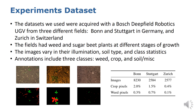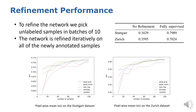Annotations include three classes: weed, crop, and soil or miscellaneous. The table here shows the number of images in each dataset and the ratio of foreground pixels. We can see that there is a high imbalance of classes in the data. The experiments we ran are designed to show how the proposed sample selection strategies impact the performance of the network in the new environment.